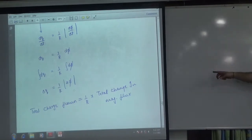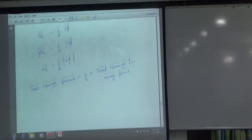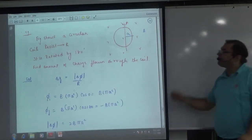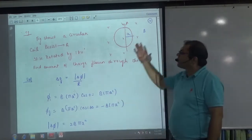This formula to be remembered. Please remember this formula. And how to apply this? For example, a coil is situated in magnetic field B. The orientation of the coil is like this.